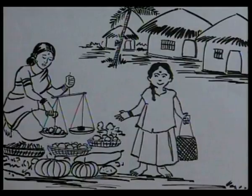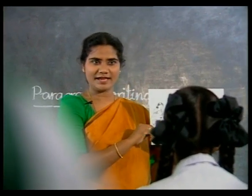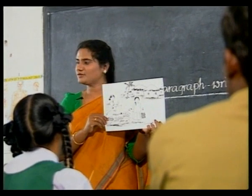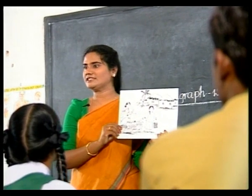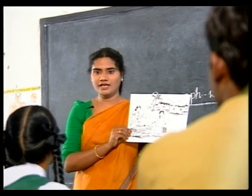Now look at this picture — she is Gauri. What is she doing? She is buying vegetables. Where is she buying? She is buying vegetables in the market. Can you pick up the hints from the conversation? Gauri, buying, vegetables, market. We can say: Gauri is buying vegetables in the market.